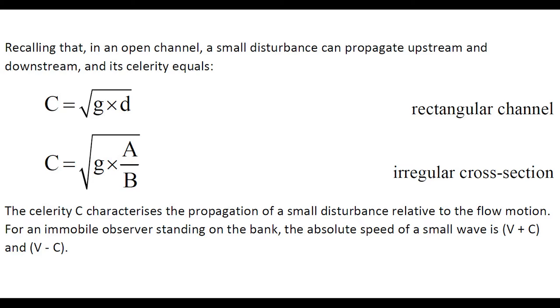Recalling that in an open channel, a small disturbance can propagate at a celerity C. Such a celerity characterizes the propagation of a small disturbance relative to the flow motion. For an observer immobile standing on the banks, the absolute speed of such a small wave would be V plus C or V minus C.